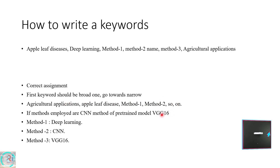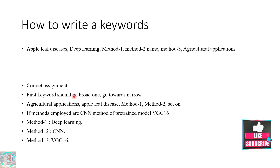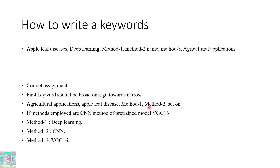Consider if you have used VGG16 - you cannot place it as method one directly, because it is a narrowed version characterized as a subset of deep learning. So in the place of method one, you need to place deep learning. The order becomes: first, agricultural application; second, apple leaf; then in the method one position, deep learning; then CNN; and then VGG16.